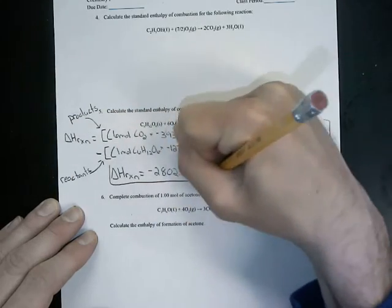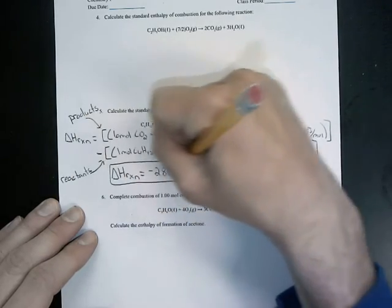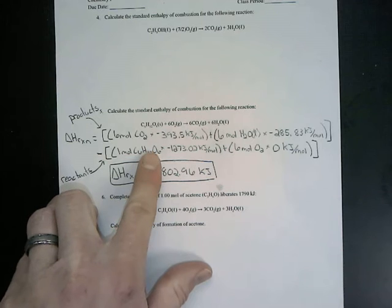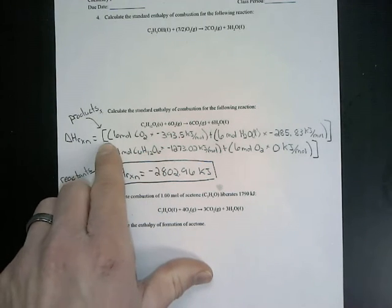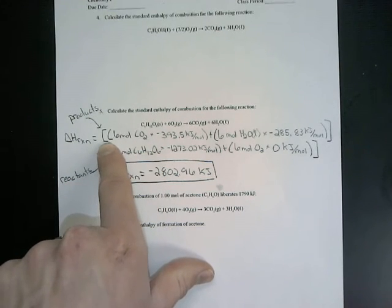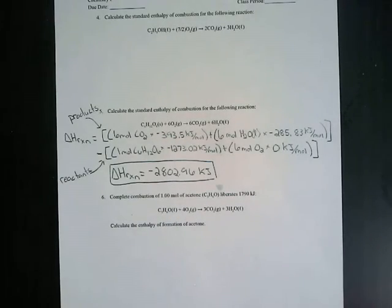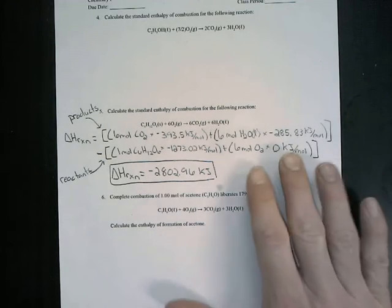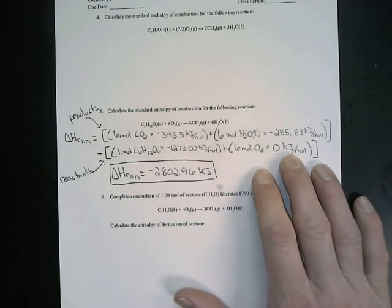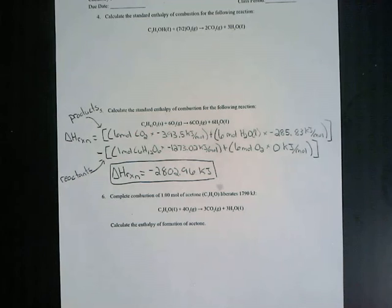The key on these types of problems is making sure we look up the correct value and we put those parentheses and brackets in the correct place. If you do that and you punch it exactly like this in your calculator, everything should work out. Now you need to copy this problem down and we will work on problems 4 and 6 later.